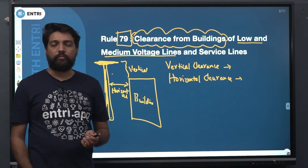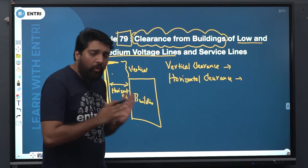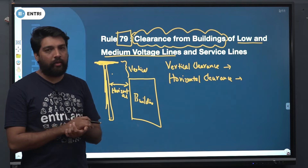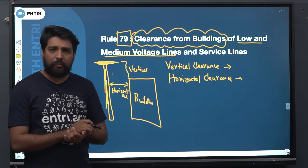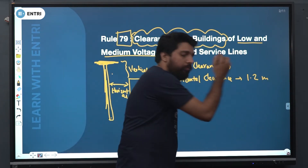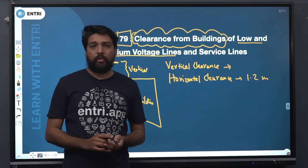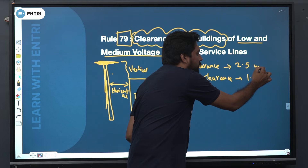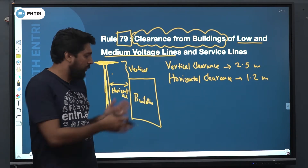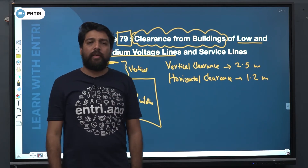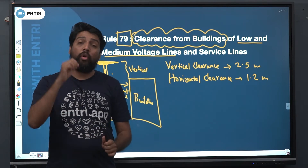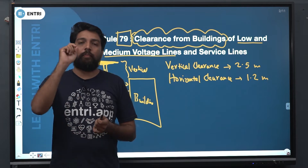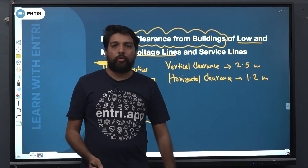Vertical clearance is vertical. In this low and medium voltage line it is exactly double — nearly double. Horizontal clearance is 1.2 meter and vertical clearance is 2.5 meter. So, clearance from buildings for your low and medium voltage line and service line: horizontal clearance is 1.2 meter and vertical clearance is 2.5 meter. Simple.